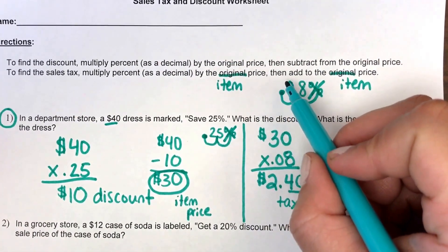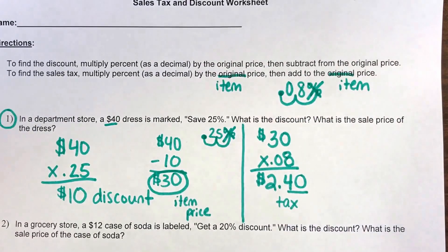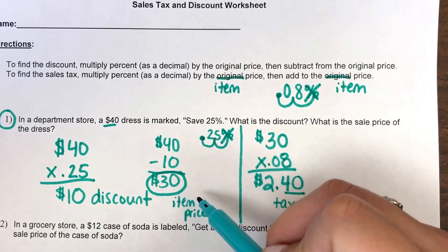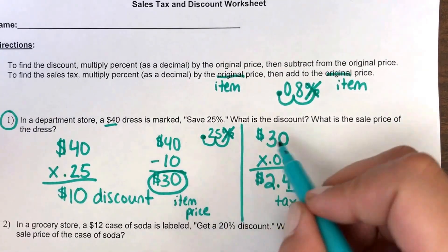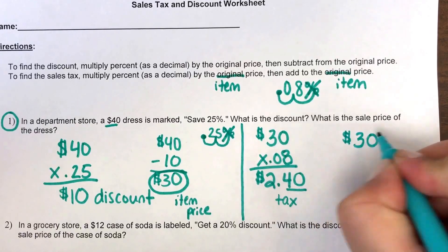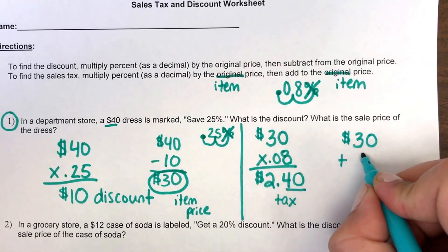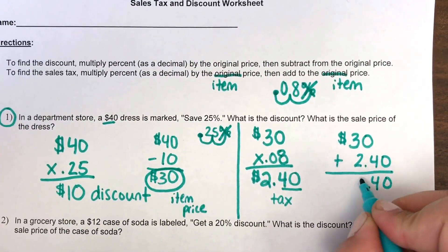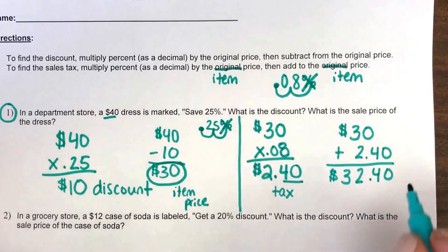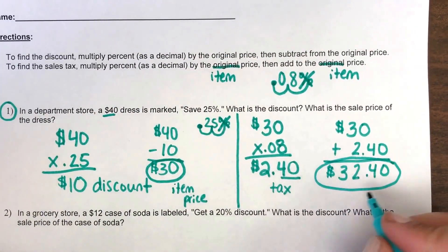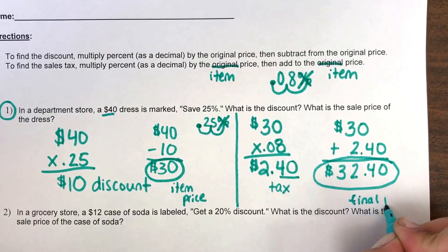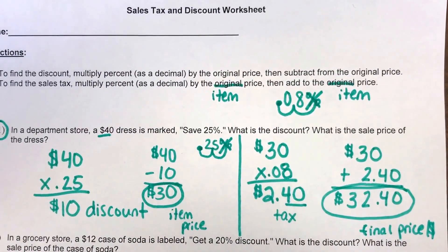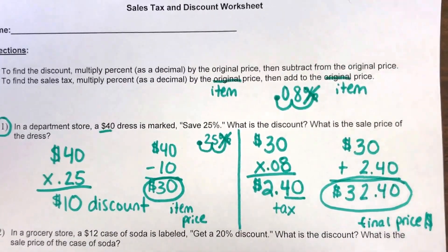The last part of this step says add your tax to the item price — not your original price, your item price, because you already got your discount. So my item price was $30 and after adding the tax of $2.40, I'm left with $32.40 as my final price. In this video I showed you how to find both the discount and the tax of an item.